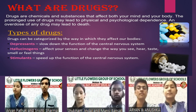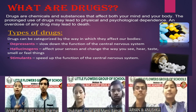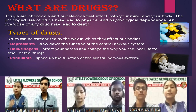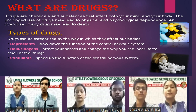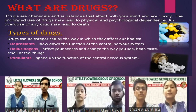Depressants slow down the function of the central nervous system. Hallucinogens affect your senses — they change the way you see, hear, taste, smell, or feel things. Stimulants speed up the function of the central nervous system.